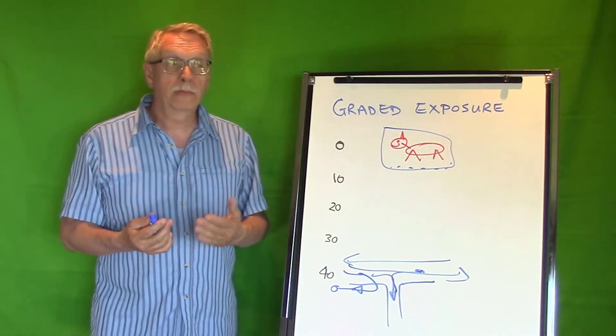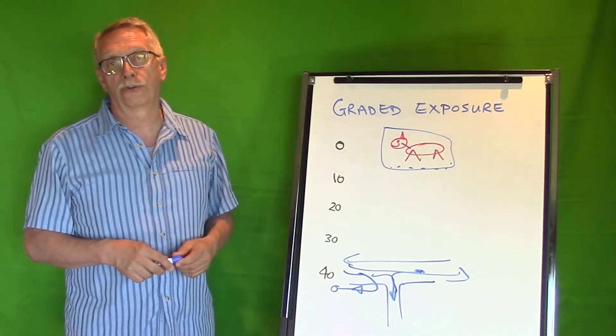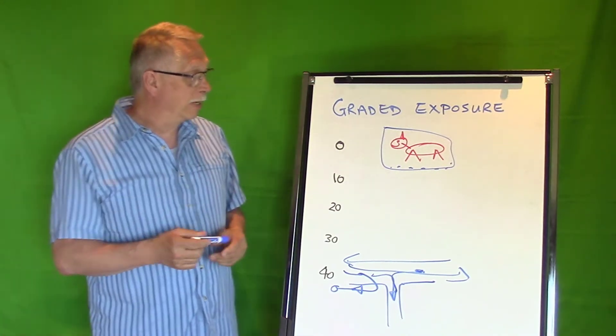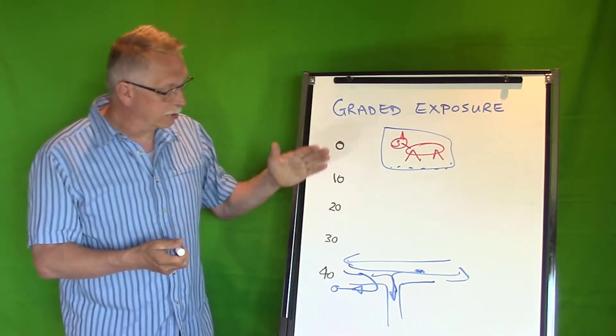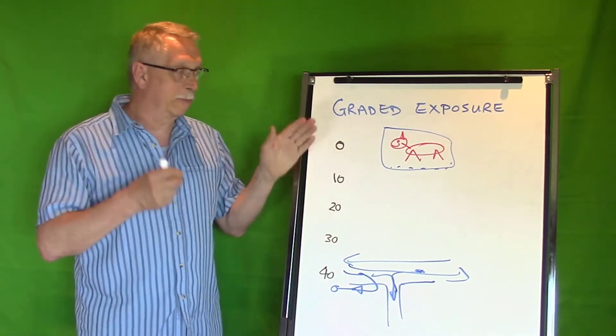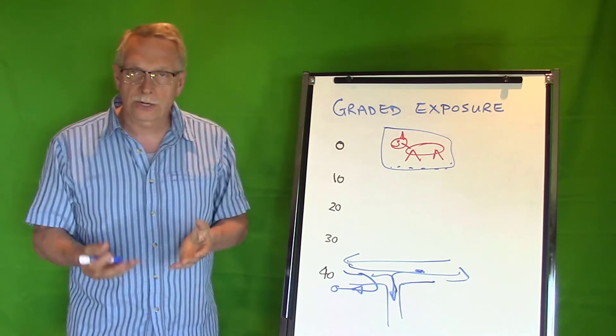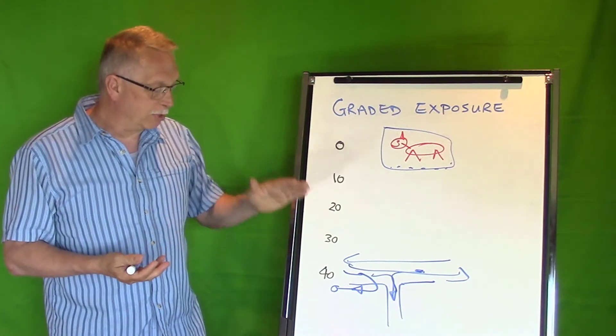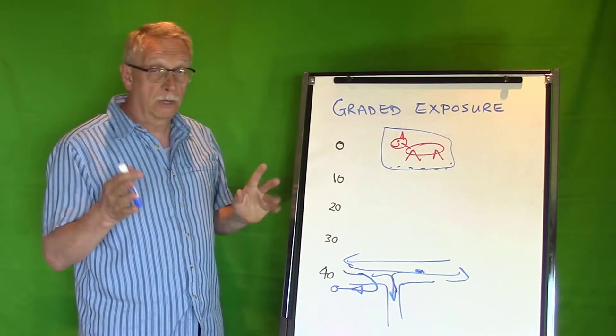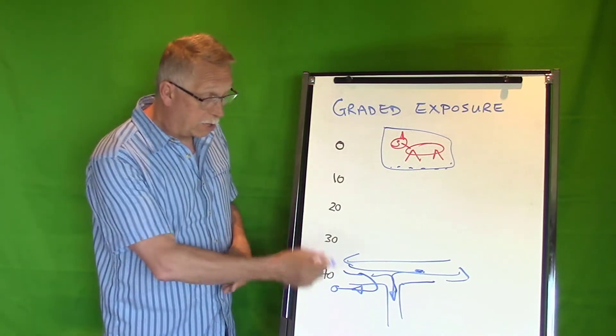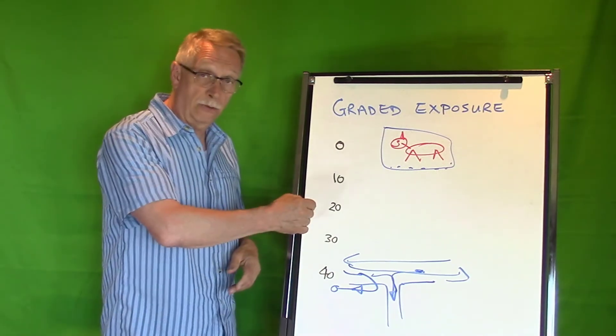Next time, you can start getting closer and closer. But the graded exposure idea is that we start at a distance where the stimulus does not cause the reaction. We get them used to that level. Some days your dog may be more reactive—you've got to back off. Other days you can get closer.